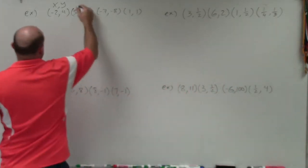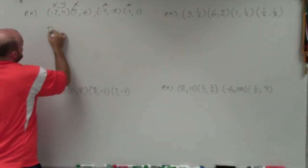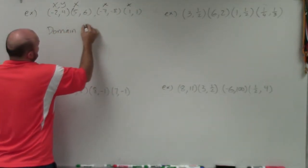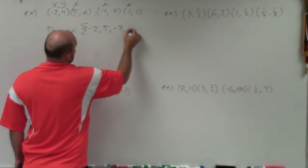So basically what I'm going to do is just go and pick out all of my x's. And then I'm just going to say domain, and I'm going to use a set notation and just do negative 2, 5, negative 7, and 1.